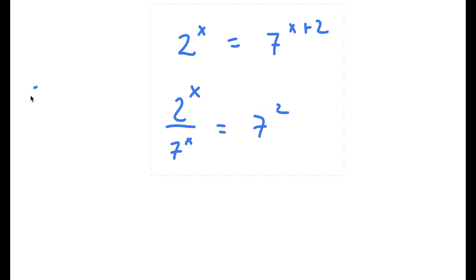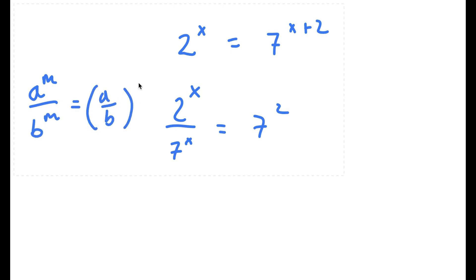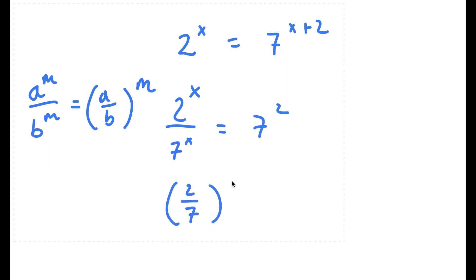Now, if I have something in the form a to the power of m over b to the power of m, this is equal to a over b to the power of m. So 2 to the power of x over 7 to the power of x is going to equal 2 over 7 to the power of x, which is equal to 7 squared, which is 49.